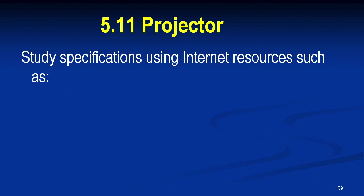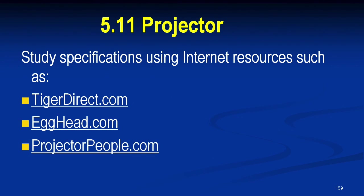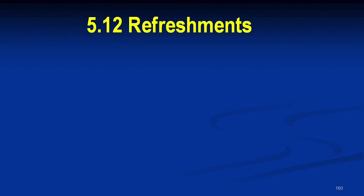Continuing on — 5.11: Study specifications using internet resources. The textbook lists some places to get more information to help make those decisions. I like my system — when I find a great projector at a venue I travel to, I make a note of the manufacturer and model so that when it's time for my next one, I know what that quality is.